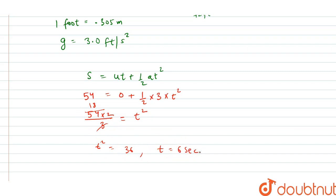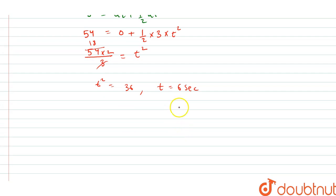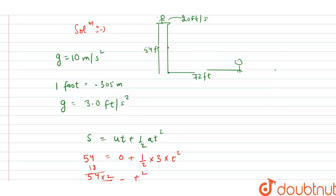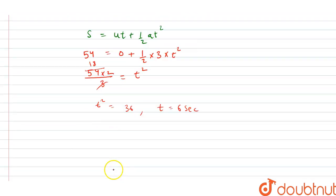equal to 6 seconds. So time is 6 seconds. So now we find the distance at where the packet will fall from the tower. The distance is equal to speed times time.